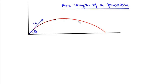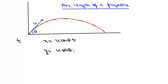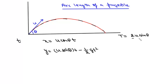We know that at any time t, the x coordinate of this projectile is given by u cos θ · t, and its y coordinate is given by u sin θ · t − ½g t². We are finding the arc length for its entire time of flight, and the time of flight is simply 2u sin θ / g. For time of flight, we put y as 0 and get t = 2u sin θ / g.